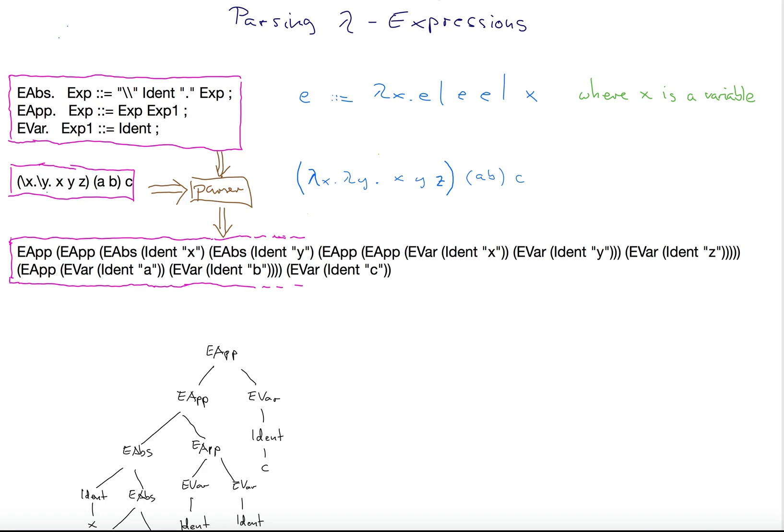Last time I explained how to read this expression down here which was produced by the parser from this lambda calculus program, and the parser itself was generated by the grammar in the top left corner. So now if we have the same expression, we start from the same expression which is given here in blue and we want to parse it by hand, how do we do this?